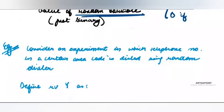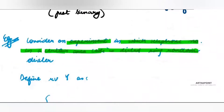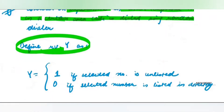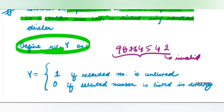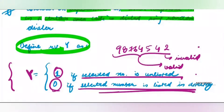Consider another example: an experiment in which a telephone number in a certain area code is dialed. You shuffle out and dial a number — that number can be valid or not. For example, you may dial 987-6454-2; when you dial it, maybe somebody says it's an invalid number, or maybe somebody picks up. I define my random variable Y as 1 if the selected number is unlisted and 0 if the selected number is listed, meaning it is valid. Again, because I have linked my sample space to different numbers, I have formed a random variable.